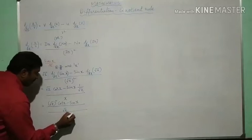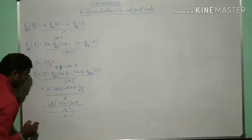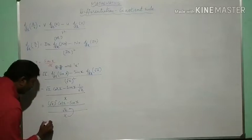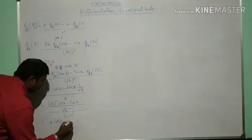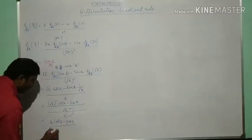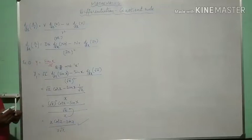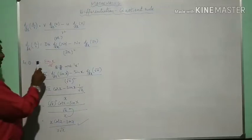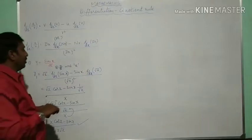Now I will shift this here. You will get the answer. Square and root cancels to x. x cos x minus sin x whole divided by x root x. This is the answer for derivative of sin x by root x using quotient rule.